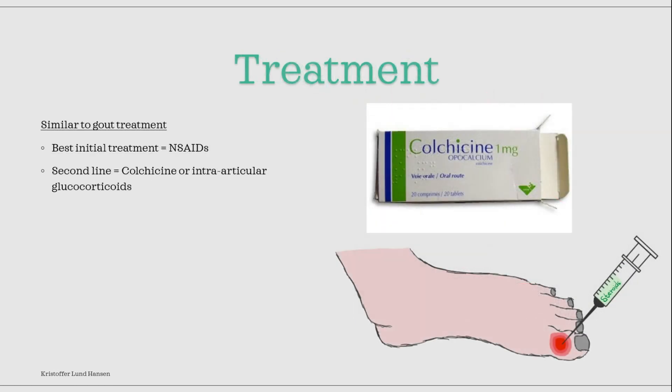The treatment of pseudogout is very similar to that of gout. The best initial treatment to attempt is common NSAIDs, like ibuprofen. If NSAIDs prove to be inefficient or contraindicated — for example, if a patient is susceptible to peptic ulcers — then colchicine or intraarticular glucocorticoids are given. Generally, try NSAIDs first, and if they are not good enough, move to colchicine or glucocorticoids.